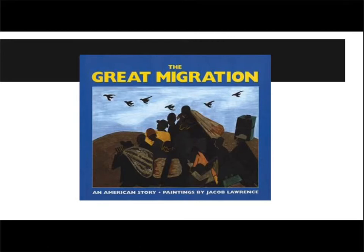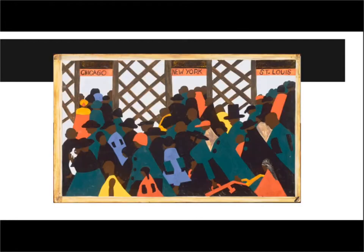Jacob Lawrence created a series of paintings that described why people moved from the south to the north back in the early 1900s. We're gonna look at these paintings and we are going to go on a web quest to try to discover what factors helped them decide where to move and why.